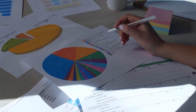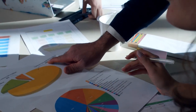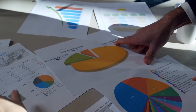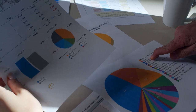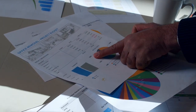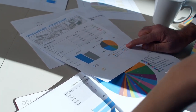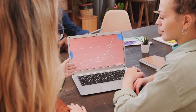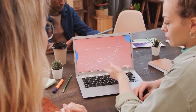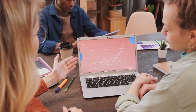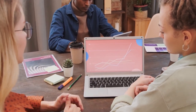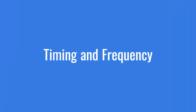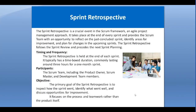It's a continuous improvement session. Once the sprint is completed and the review — the demonstration of the sprint's work — has been provided to the stakeholders, especially the customer and product owner, the sprint retrospective session is held. The sprint retrospective follows the sprint review and precedes the next sprint planning. It is typically three hours for a one-month sprint.